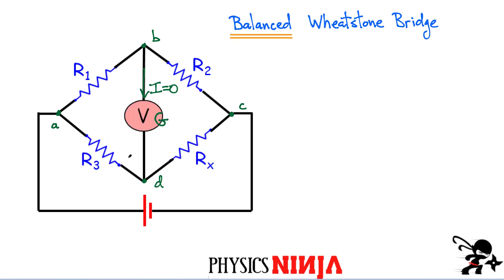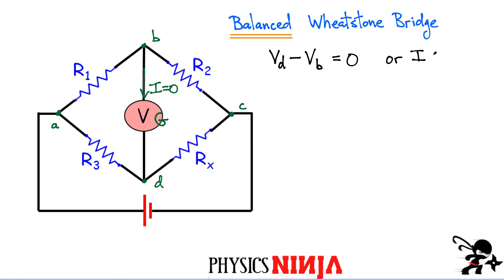Here's the circuit again. I'm going to say that this bridge is balanced, which means the current flowing down that center branch is zero. That means the voltage between points D and B has to be zero. If there's any potential difference between those two points and we have a wire linking them, there will be a current flowing through there. So it's very important that we have this condition: the current I through that center branch has to be equal to zero.